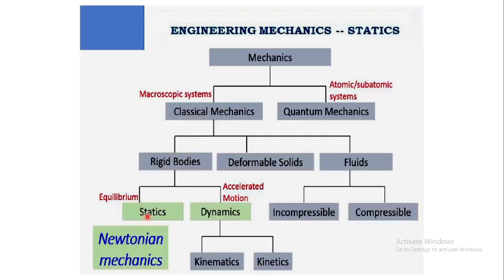Classical mechanics is further divided into rigid body, deformable solids, and fluid mechanics. Fluid mechanics deals with incompressible and compressible fluids. We are mainly concerned with rigid body and deformable solid bodies. Rigid bodies are further subdivided into statics and dynamics — studied together under the domain of Newtonian mechanics. Dynamics has two branches: kinetics and kinematics. Kinematics deals with position, velocity, acceleration, and geometrical aspects. Kinetics deals with force aspects such as the effect of wind and gravity.